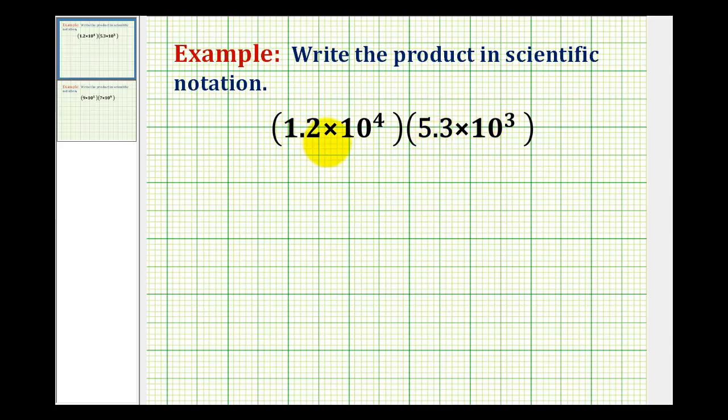So the first thing to recognize here is that everything is being multiplied together. We have 1.2 times 10 to the fourth times 5.3 times 10 to the third. And since multiplication is commutative, we can change the order of this multiplication and it will not affect the product.